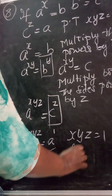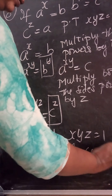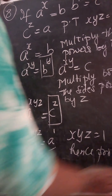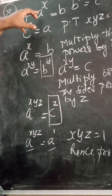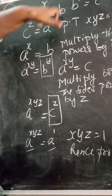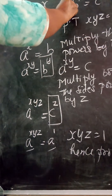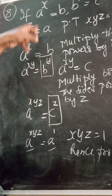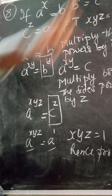Hence proved. I hope you will understand now. a raised to the power of x is equal to b, b raised to the power of y is equal to c, and c raised to the power of z is equal to a — prove that xyz is equal to 1.